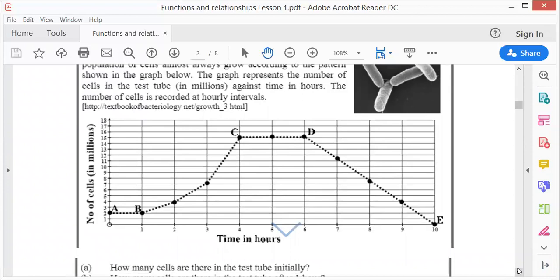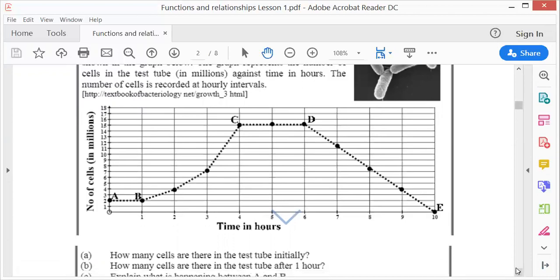First question: how many cells are there in the test tube initially? Initially means in the beginning, where time is zero. The dot is at 2, so it should be 2 million bacteria. Second question: how many cells after one hour? Go to one hour, go up and across. It's still 2 million. After one hour it's still 2 million.